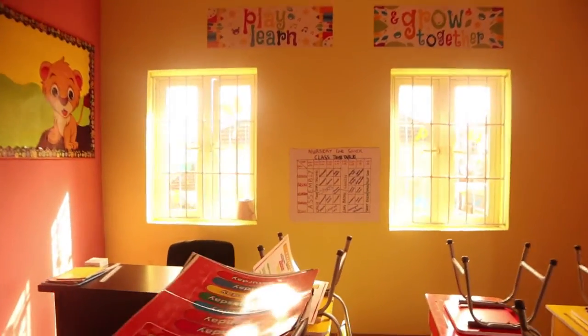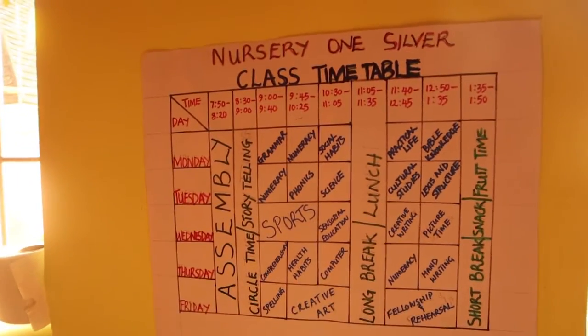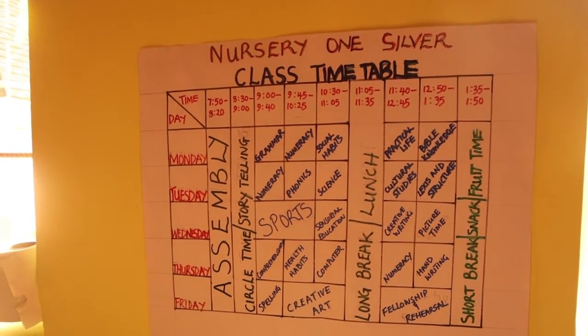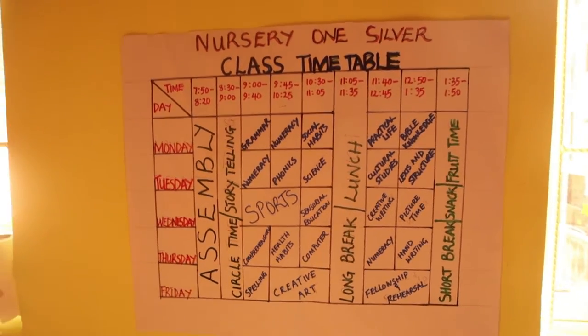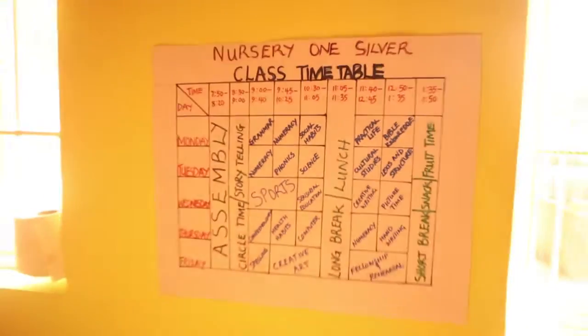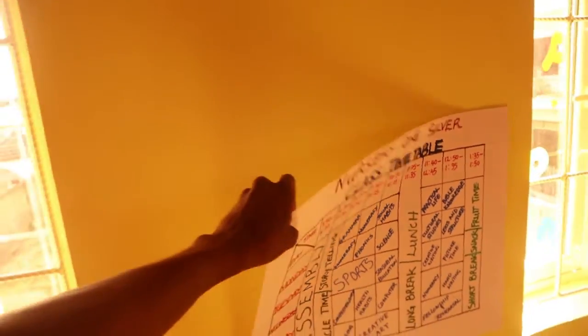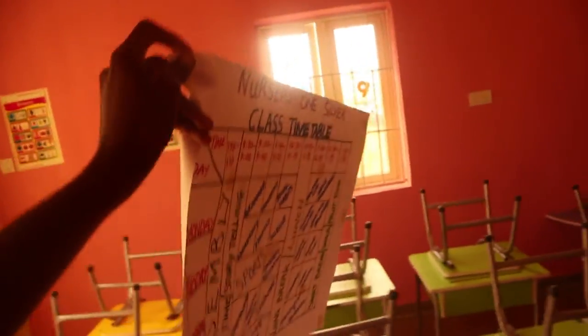If your classroom is as beautiful as this and you are using handwriting as your timetable, I'm not sure you're doing well. This is wrong in the 24th century. It is meant to be typed out and not to be big and handwritten like this. So this is a lovely classroom, but please try and use Canva design. This is wrong.